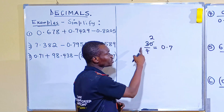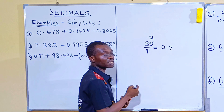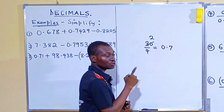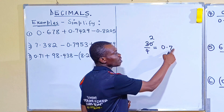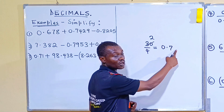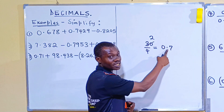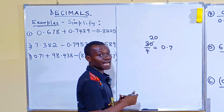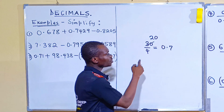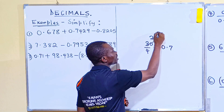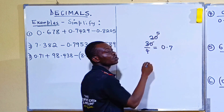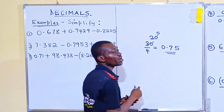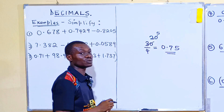4 into 2, it cannot go. You are not going to put another decimal point because you already have one. So you just go ahead and add 0. So 4 into 20 will now give you 5. So you have 0.75 as your solution.